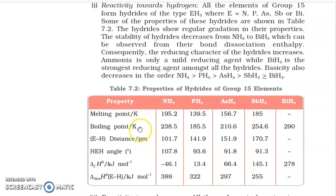Otherwise, melting point and boiling point depend on size. As size increases going down the group, intermolecular forces increase, so melting point and boiling point increase. But exceptionally, ammonia's melting point and boiling point are higher than phosphine (PH3). The reason is the formation of intermolecular hydrogen bonding. Note the question: NH3 has a higher boiling point than PH3.